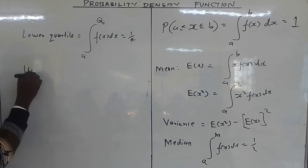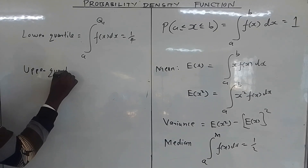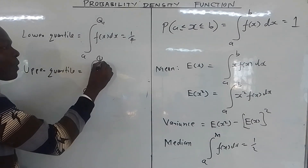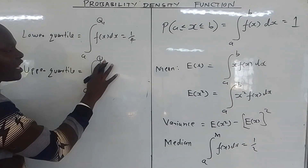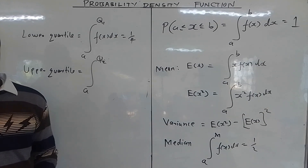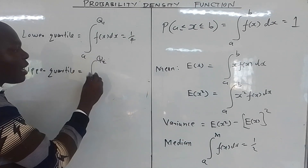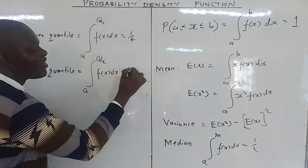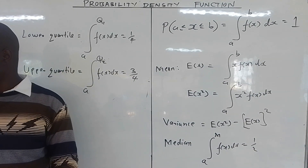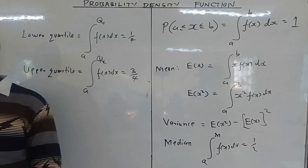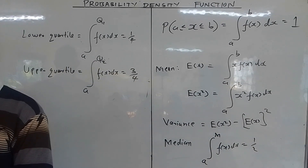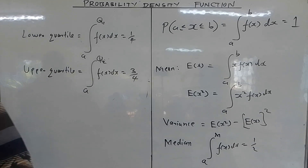For the upper quartile, if you integrate from the lower class limit to the upper quartile Q3 of f(x) dx you are supposed to get three quarters. So when you have the upper quartile and the lower quartile you can get the interquartile range. The interquartile range is the upper quartile minus the lower quartile.